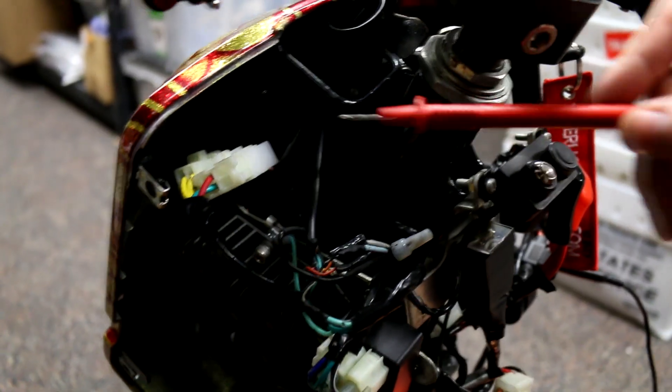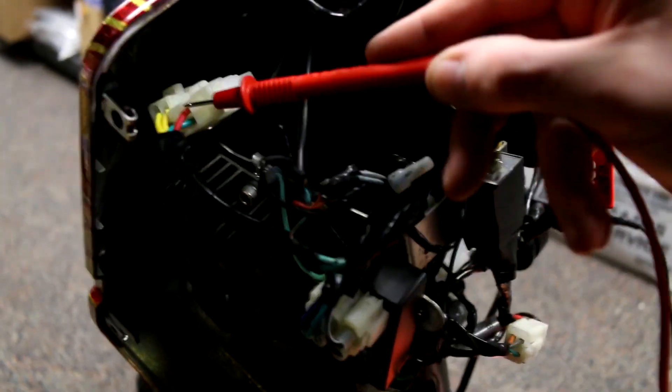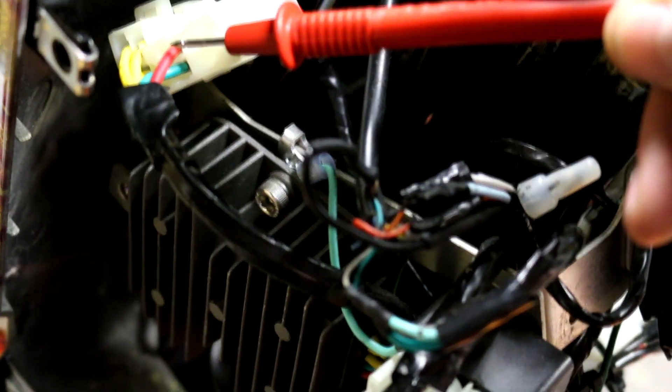Okay, so on your regulator you'll see that there is a red wire coming out of it. That's going to be the feed for your power, so that's going to be the wire that has the charging volts coming back from the stator.